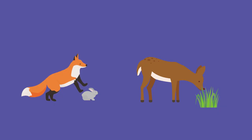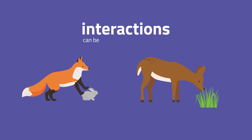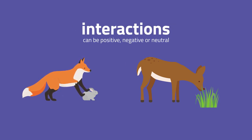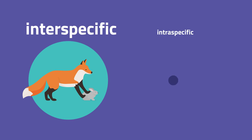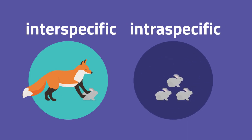All species in an ecosystem will interact in different ways, and interactions can be positive, negative or neutral. Ecological interactions are classified into two categories: either interspecific or intraspecific.